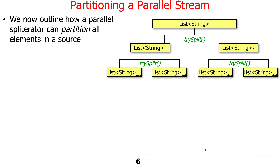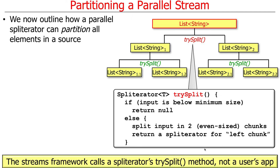Partitioning is different from traversing. Traversing is getting each element one at a time, and partitioning is breaking things up into chunks. The stream's framework is what actually does this — it's not something you would typically call from a user app. Instead, the framework does this for you using a method called trySplit, calling it recursively to break up the input source into smaller pieces, the chunks.